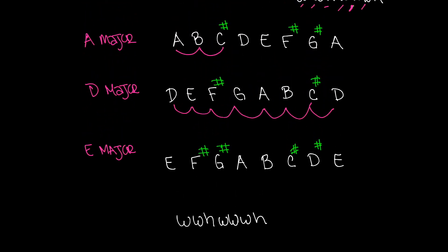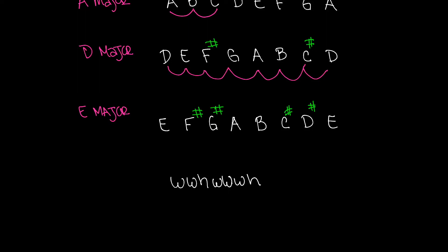We've properly built three major scales. A major: A, B, C sharp, D, E, F sharp, G sharp. D major: D, E, F sharp, G, A, B, C sharp. E major: E, F sharp, G sharp, A, B, C sharp, D sharp. As a rule, when we play scales we number the notes one through seven and play all the way back to the root note — this relates to resolution, which is a topic for a later video.